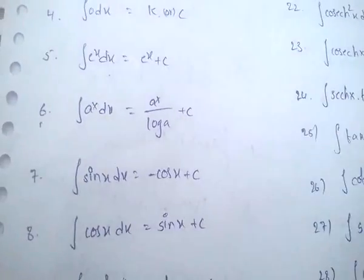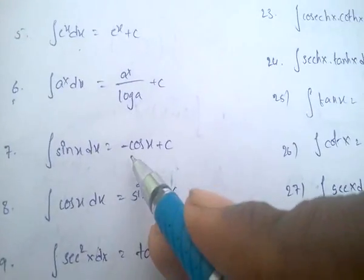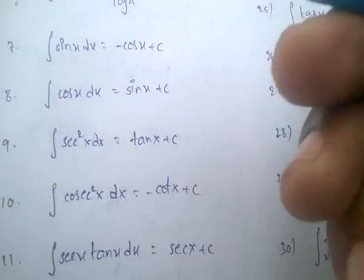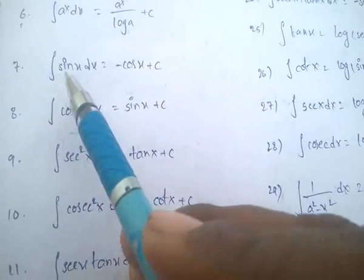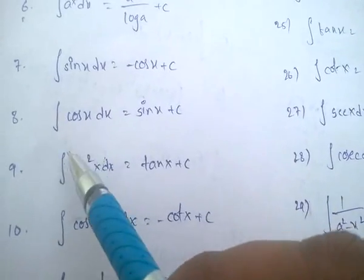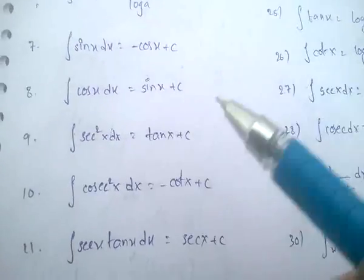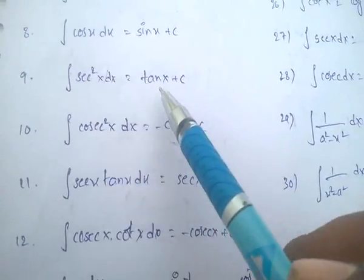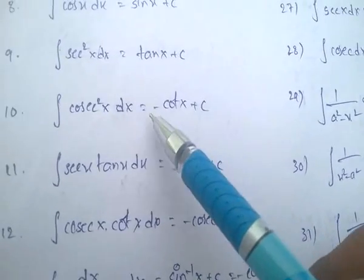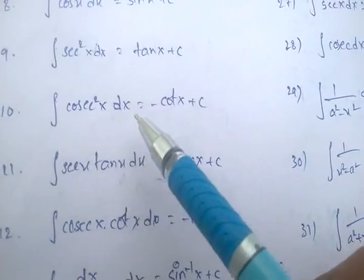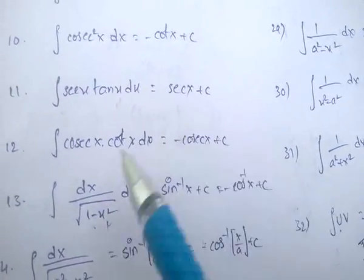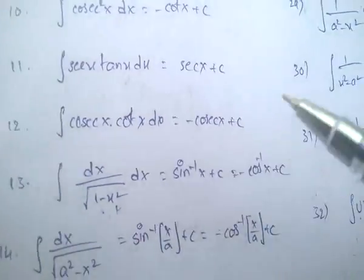Integral of sin x equals minus cos x. Integral of cos x equals plus sin x. Once again: integral of sin x equals minus cos x; integral of cos x equals sin x. Integral of sec²x dx equals tan x. Integral of cosec²x dx equals minus cot x. Integral of sec x tan x equals sec x.